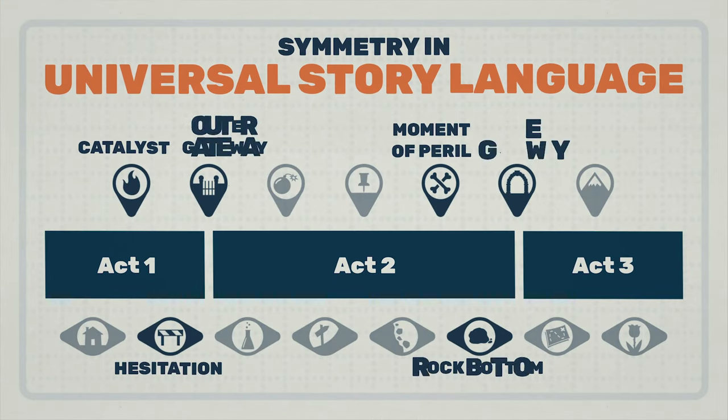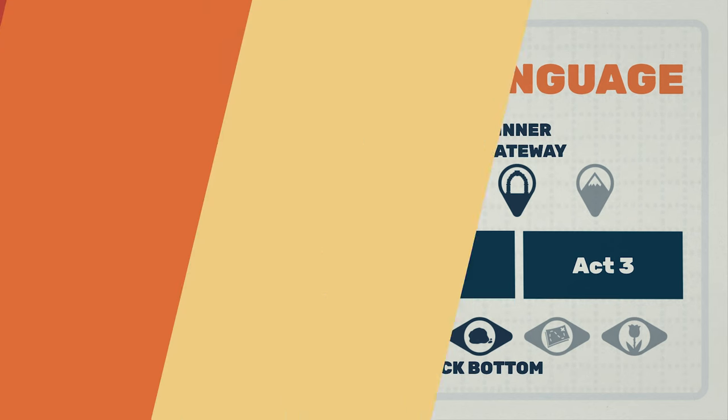On top of the moments and phases mirroring each other, there are also two mirrored sections: the catalyst-hesitation-outer gateway, and the moment of peril-rock bottom-inner gateway. In both of these triads, the first moment is something that happens to the protagonist, the next phase is the protagonist's reaction, and the final moment is the protagonist making a decision in an active way. In other words, a very similar structure happens right before each act break: an impactful moment, a reaction, and a commitment or recommitment to the goal.